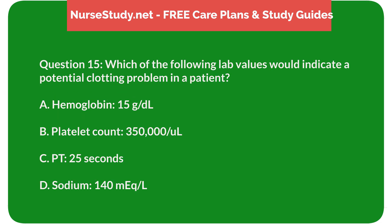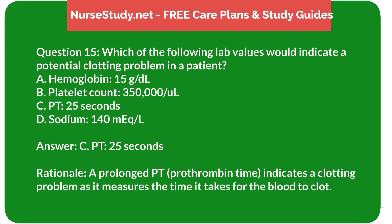Question 15: Which of the following lab values would indicate a potential clotting problem in a patient? A) Hemoglobin 15 g/dL, B) Platelet count 350,000/µL, C) PT 25 seconds, D) Sodium 140 mEq/L. Answer: C, PT 25 seconds. Rationale: A prolonged prothrombin time (PT) indicates a clotting problem, as it measures the time it takes for the blood to clot.